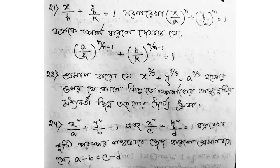Number 24 example: x squared by a plus y squared by b is equal to 1, and x squared by c plus y squared by d is equal to 1. If the two curves cut each other orthogonally (perpendicularly), prove that a minus b is equal to c minus d.